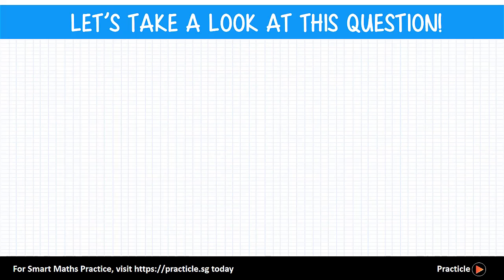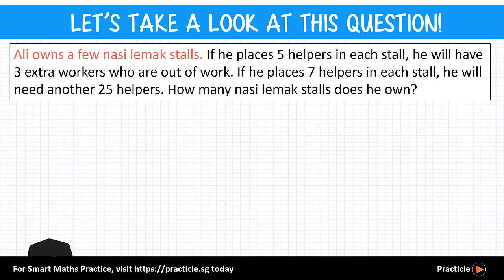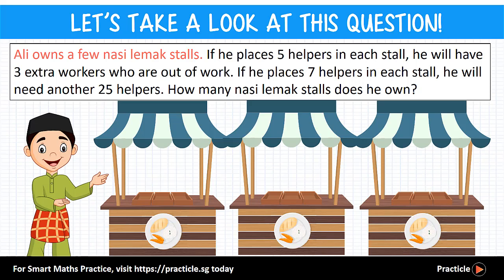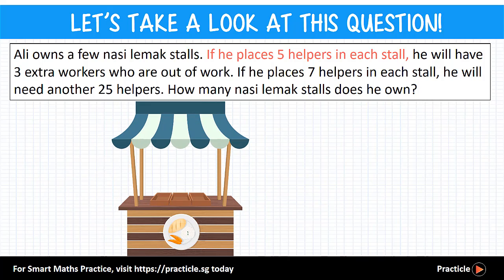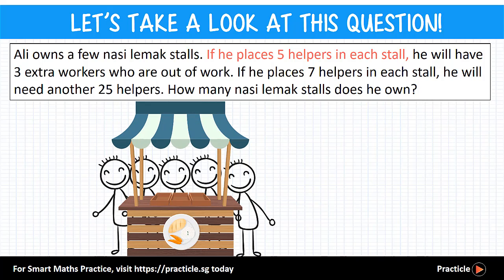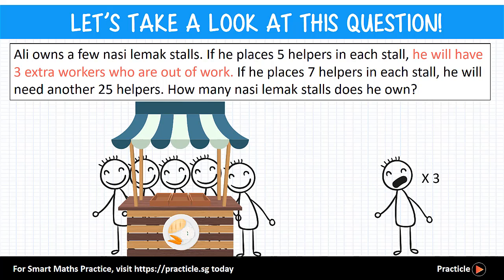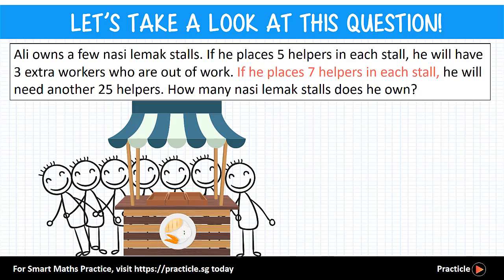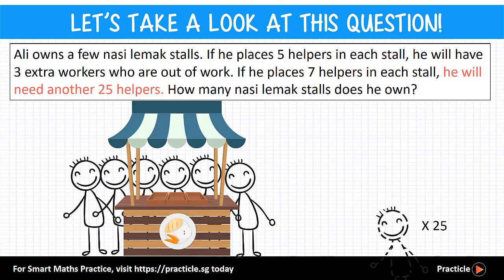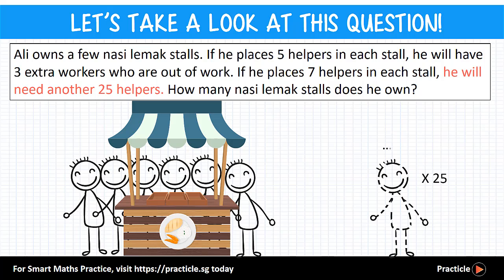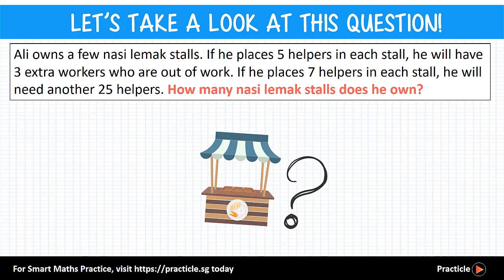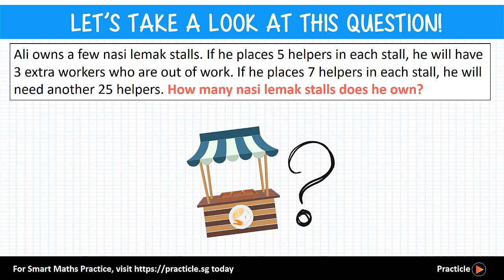Take a look at this P5 math question. We have a guy named Ali who owns a few Nasiomak stores. If he places 5 helpers in each store, he will have 3 extra workers who end up being out of work. And if he places 7 helpers in each store, he will end up needing another 25 helpers. So, how many Nasiomak stores does Ali own?